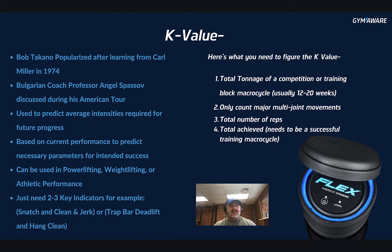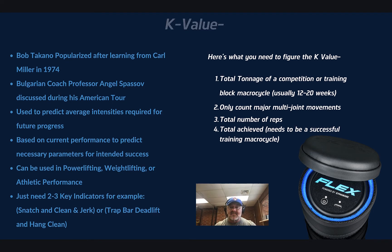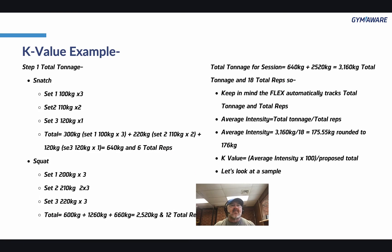The k value can be used in powerlifting, weightlifting, or athletic performance, and you only need two to three key indicators — for example, snatch and clean and jerk for weightlifting, or for a strength and conditioning coach, something like a trap bar total and hang clean. To figure the k value, you need the total tonnage of the competition or training block macro cycle, usually 12 to 20 weeks, counting only major multi-joint movements. You also need the total number of reps and it needs to be from a successful training macro cycle.